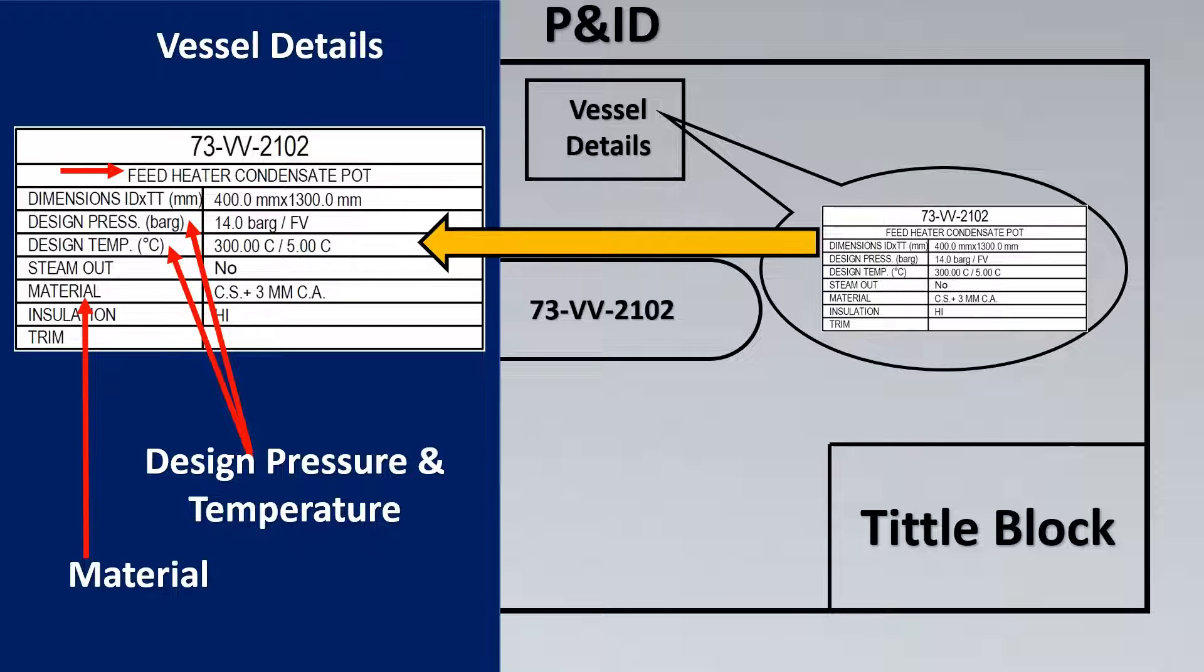Then the next thing is the material which is very important. If you see here it's mentioned CS plus 3mm CA. The CS stands for carbon steel plus 3mm CA stands for 3mm corrosion allowance. So even if indeed of corrosion is there, you have this much amount of thickness already available to mitigate the corrosion issue.